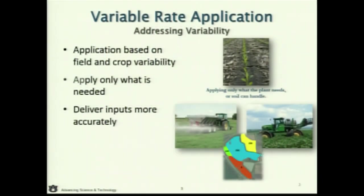Simply put, variable rate is trying to base your application of inputs on some kind of field or crop variability that we either measure or understand out there, and then only applying what's needed back to that crop or soil. When we start to break fields into either zones or grids, we know that we're going to be able to more accurately deliver inputs for the crops we grow on our farm. Variable rate application, or VRA, is the term a lot of people use, and we have to have the technology in order to implement the VRA program that we choose.